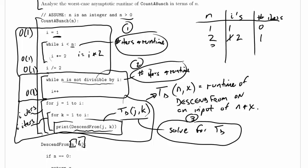When n is equal to 3, we're going to start with 1, as always. 1 is less than 3, so we'll double i. 2 is less than 3, so we'll actually go into the loop and double i again. 4 is not less than 3, and so we'll be done. And we had 2 iterations of the loop.